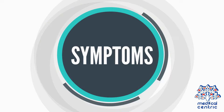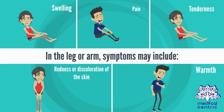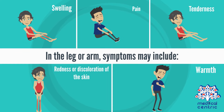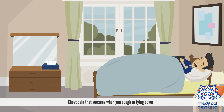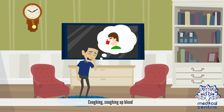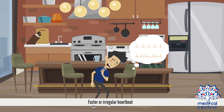Symptoms depend on the area of the body where the clot forms. In the leg or arm, symptoms may include swelling, pain, tenderness, redness or discoloration of the skin, and warmth. In the lung, symptoms may include shortness of breath, chest pain that worsens when you cough or lie down, coughing, coughing up blood, and a faster or irregular heartbeat.